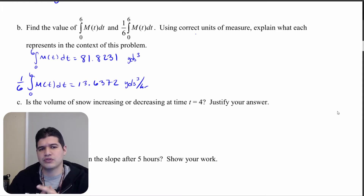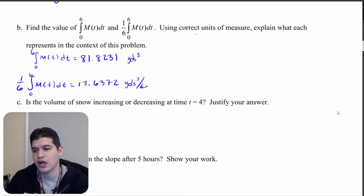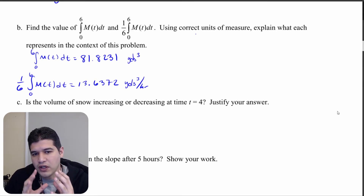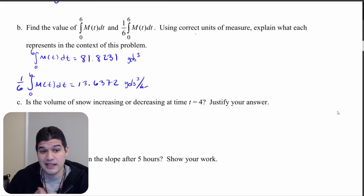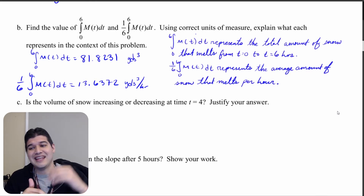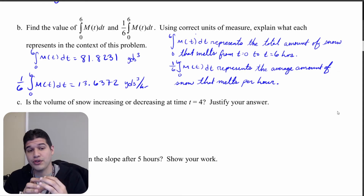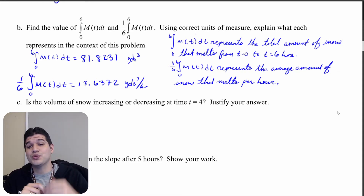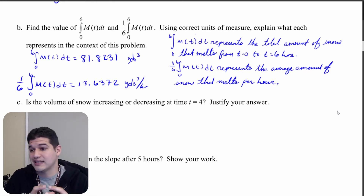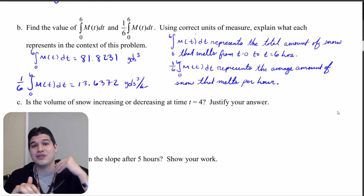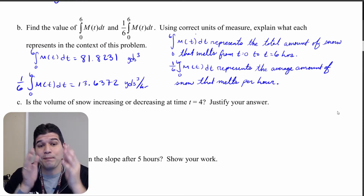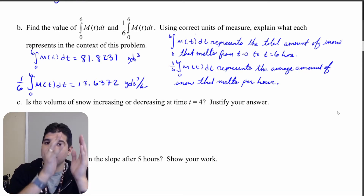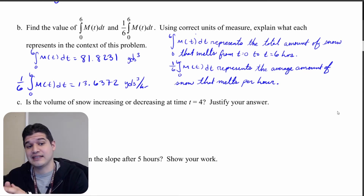Let's look at these results and say what they mean in context. The first one — the integral from zero to six of m(t) dt — represents the total volume of melted snow from t equals zero to t equals six hours. The second one, multiplied by one-sixth, represents the average amount of snow that melts per hour from t equals zero to t equals six hours.